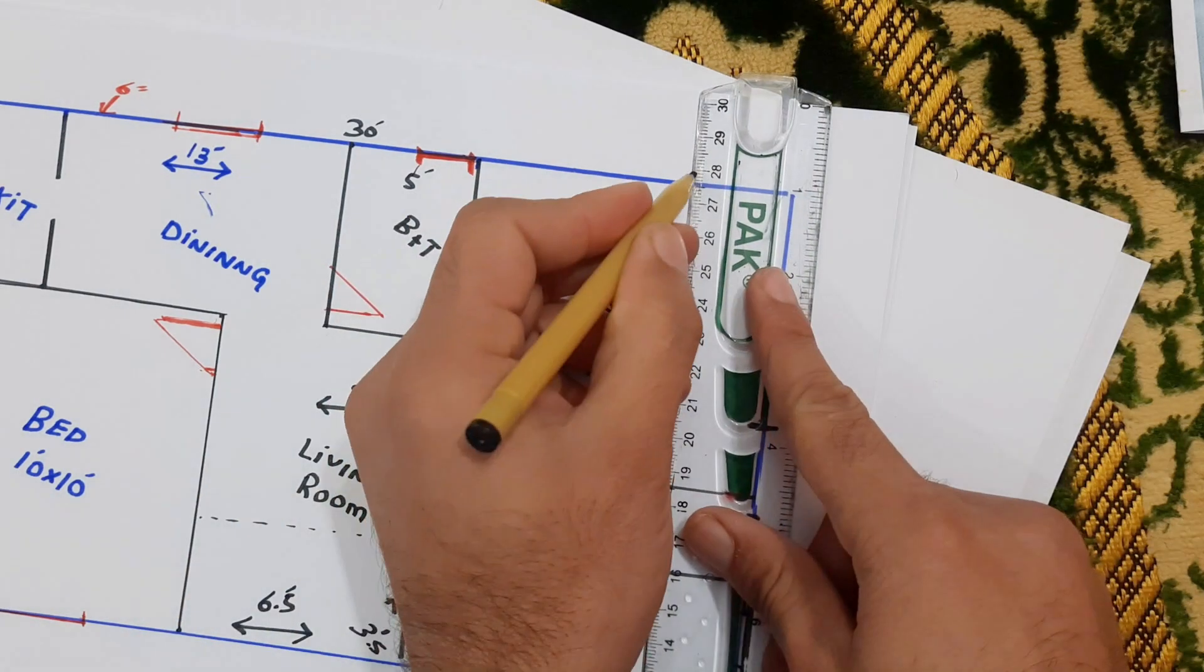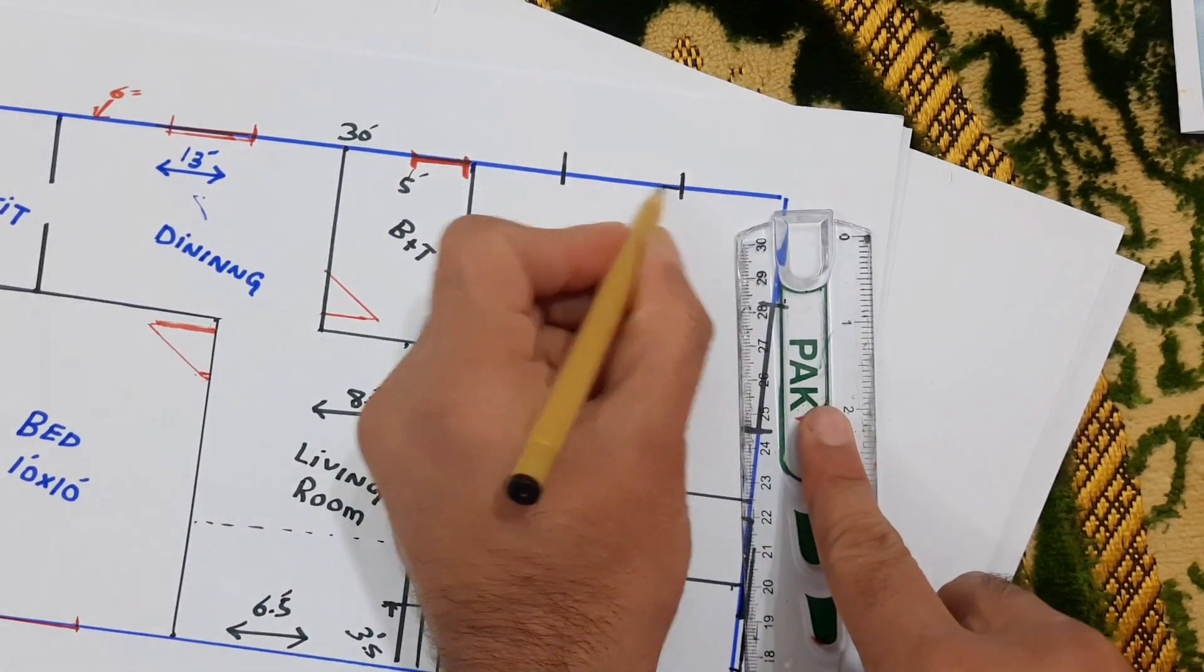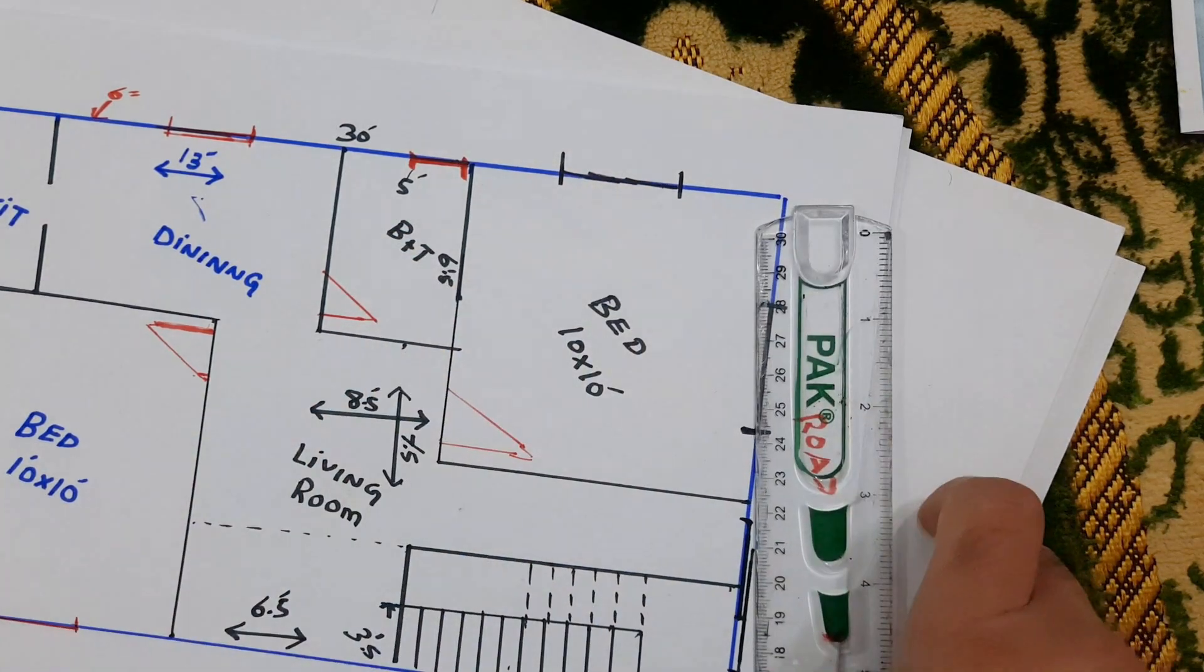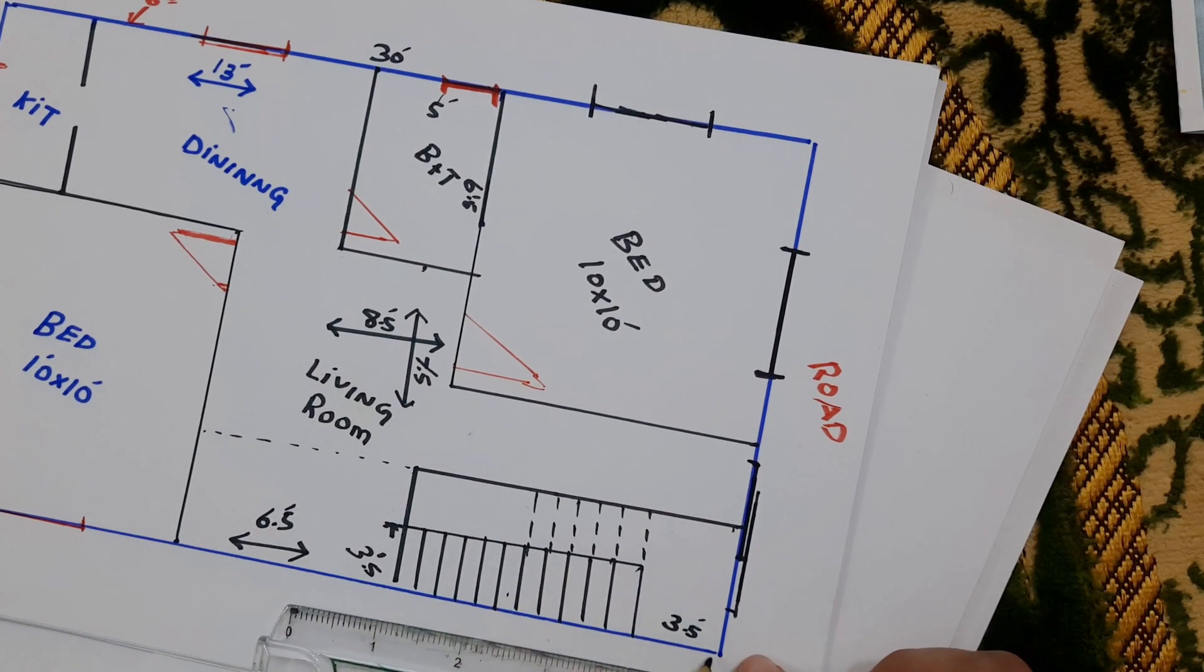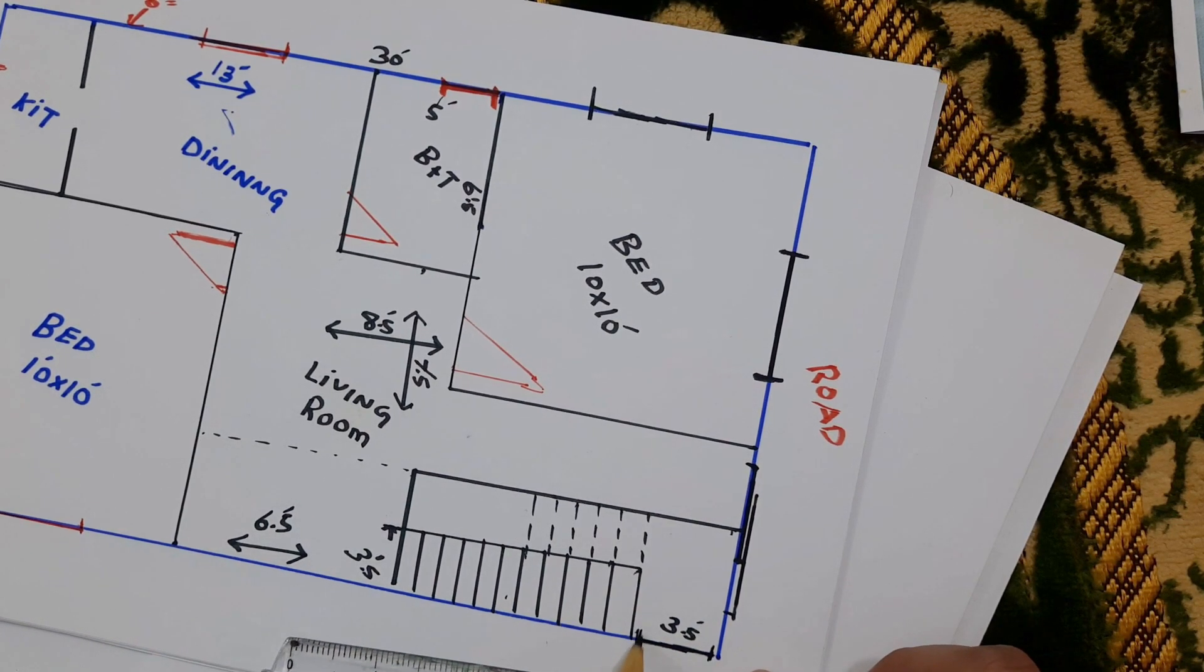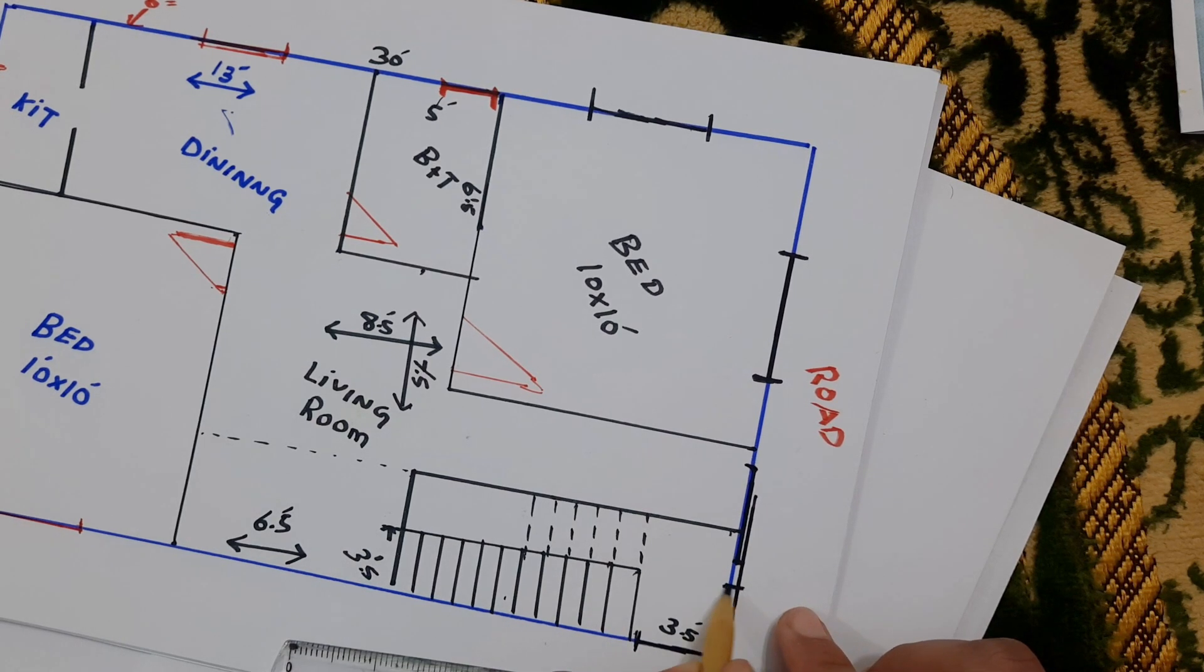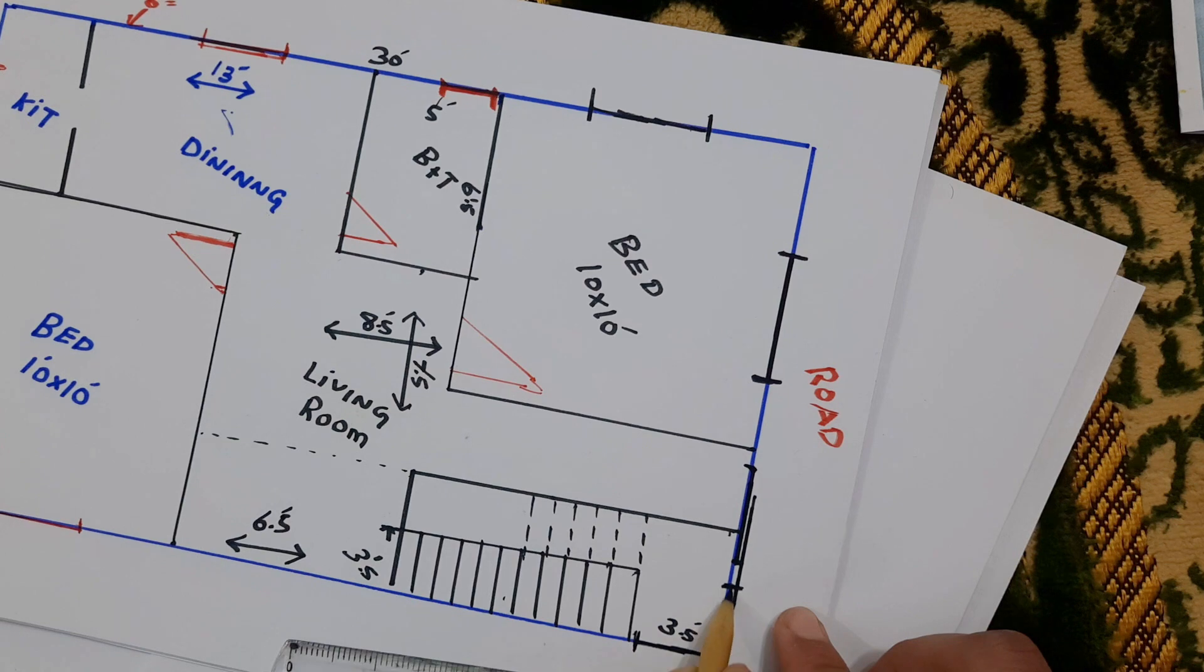Here you can make cross ventilation for this bed. Also here for this stair hall or stair landing, you can make here also, here to the front side, you can make a cross window system.